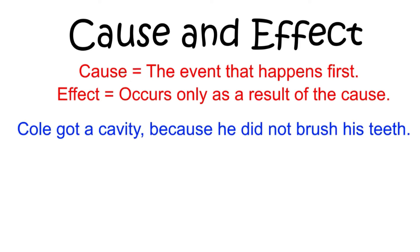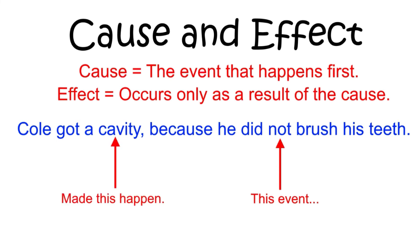In this example, there are two events: a character named Cole got a cavity, and he did not brush his teeth. But which event caused the other to happen? The event that occurred first, and thereby caused the second event to happen, is that Cole did not brush his teeth. It may not be listed first, but you can tell by the writer's logic that it was the cause of Cole getting the cavity. The fact that Cole did not brush his teeth caused him to get a cavity.